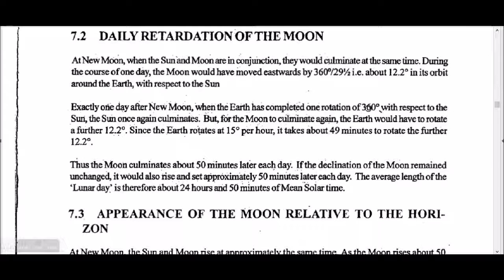Daily retardation of the Moon: at new moon, when the Sun and Moon are in conjunction, they culminate at the same time. During the course of a day, the Moon would have moved eastward by 12.2 degrees in its orbit — that is, 360 degrees divided by 29.5 days. One day after the new moon, when the Earth has completed one rotation with respect to the Sun, the Sun once again culminates. But for the Moon to culminate again, Earth must rotate a further 12.2 degrees. Since Earth rotates at 15 degrees per hour, it takes approximately 49 minutes to cover that extra 12.2 degrees. Thus the Moon culminates about 50 minutes later each day.